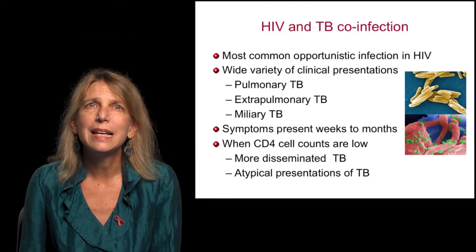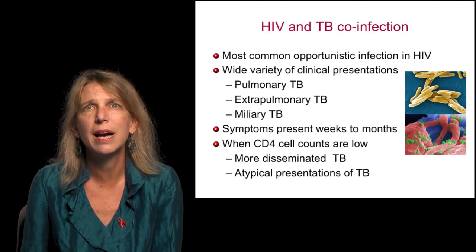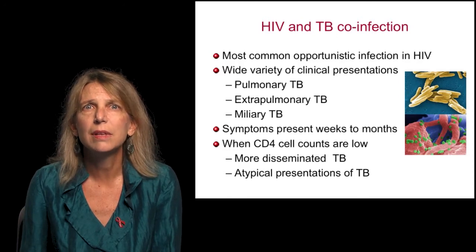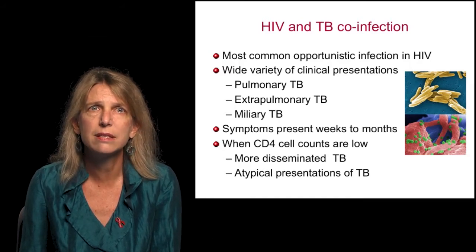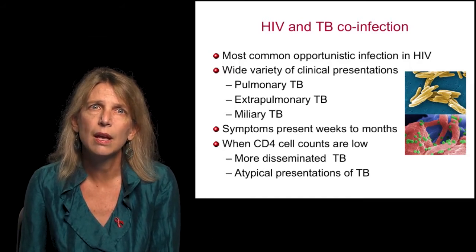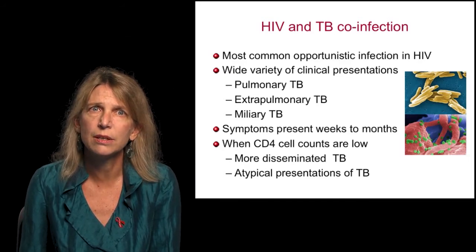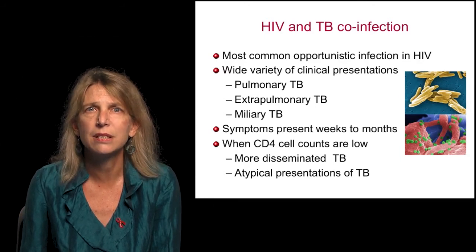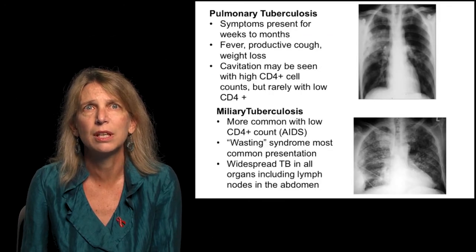Tuberculosis is the most common opportunistic infection that occurs during the course of HIV. There are a wide variety of clinical presentations. These can include pulmonary TB, extrapulmonary TB, and miliary tuberculosis. The symptoms are usually present for weeks to months. When the CD4 cell counts are low, we see more disseminated tuberculosis or atypical presentations of TB.